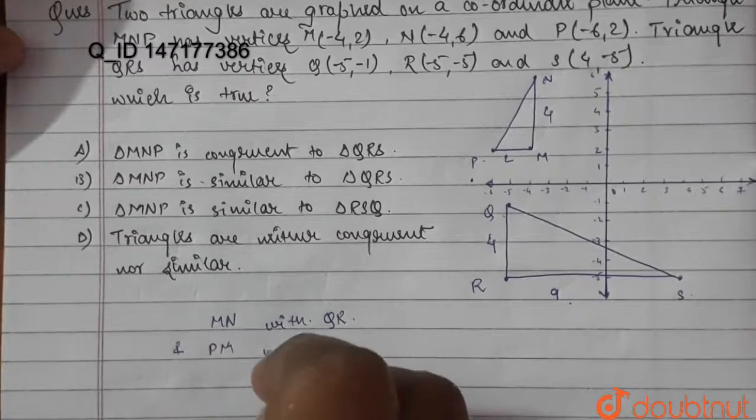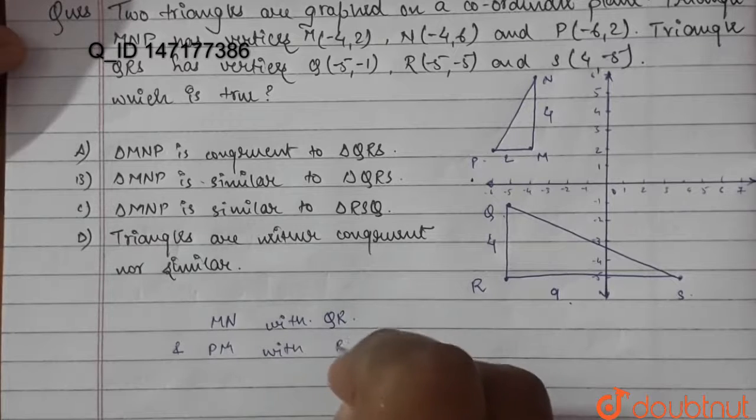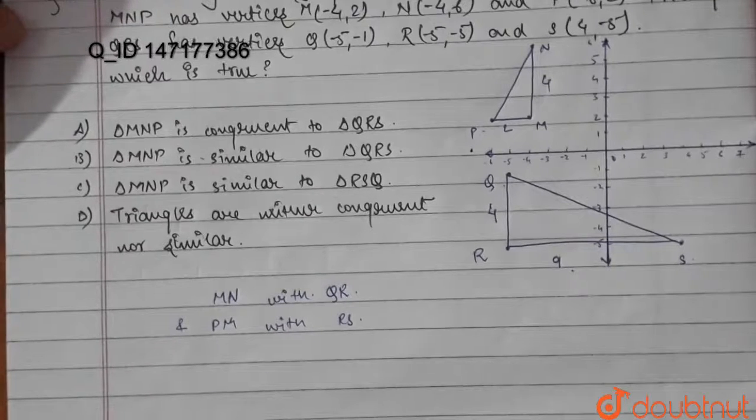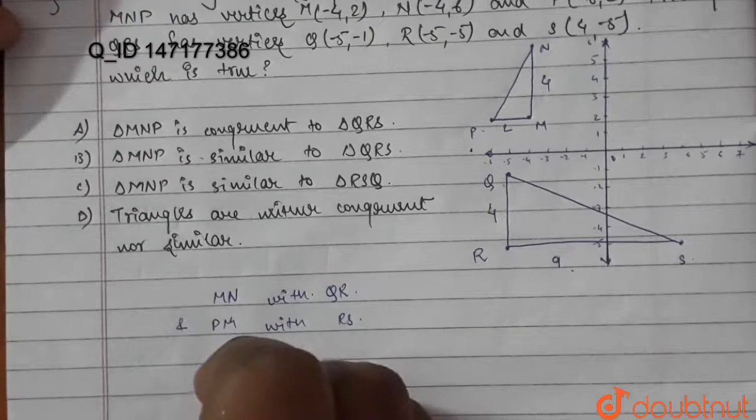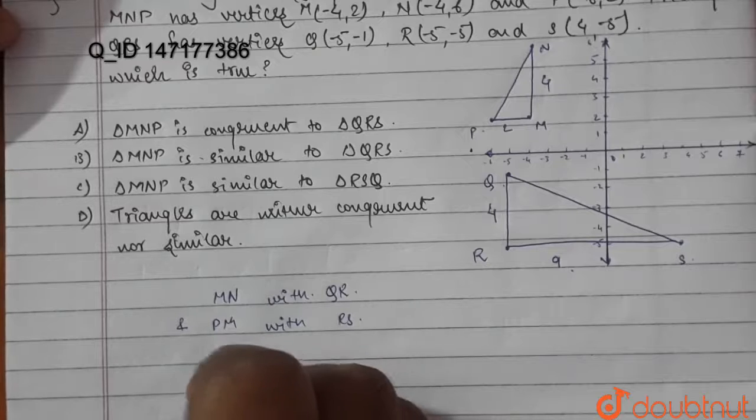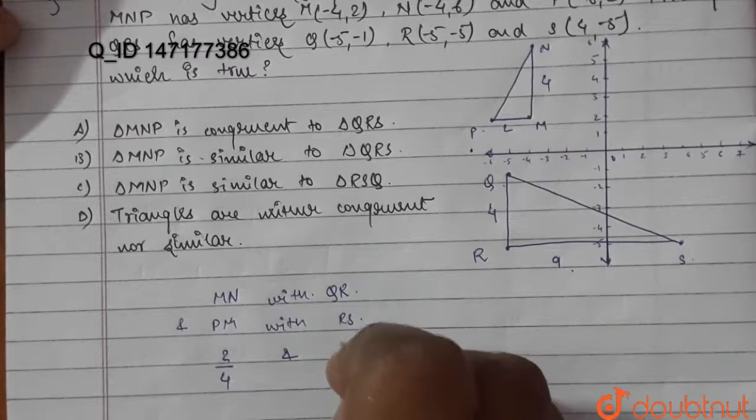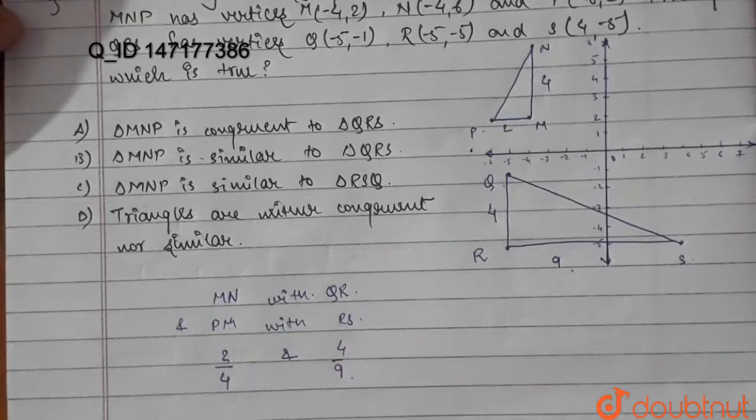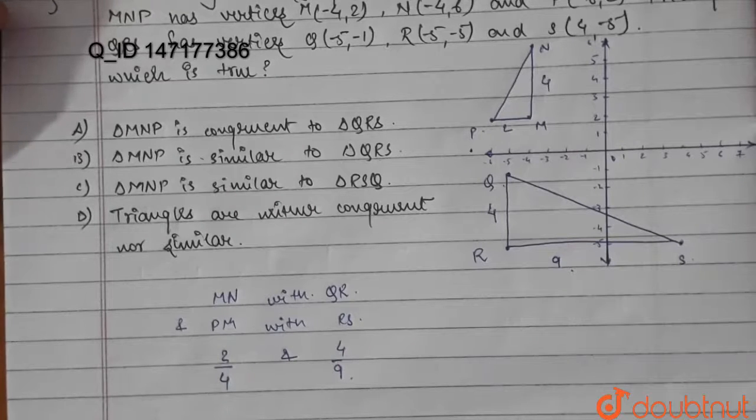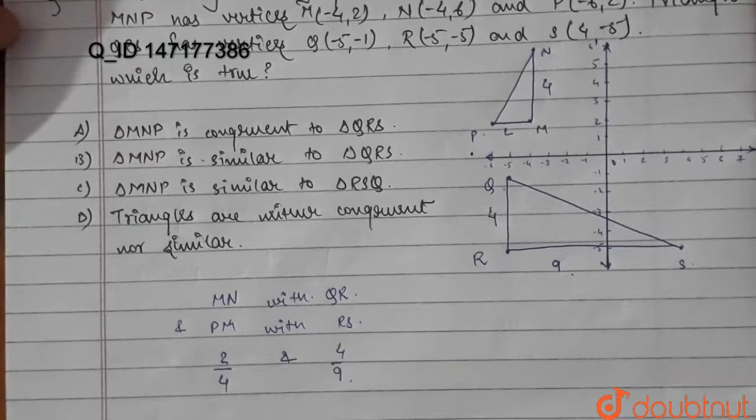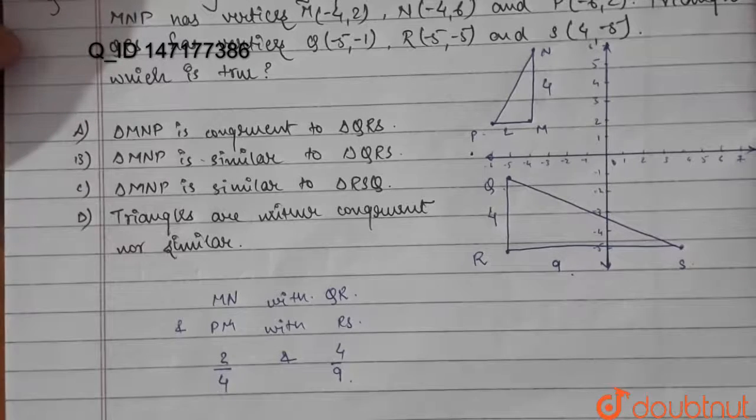And PM with RS. So their ratio will be 2 is to 4 and 4 is to 9, and we can clearly see that these two sides are not in the same ratio.